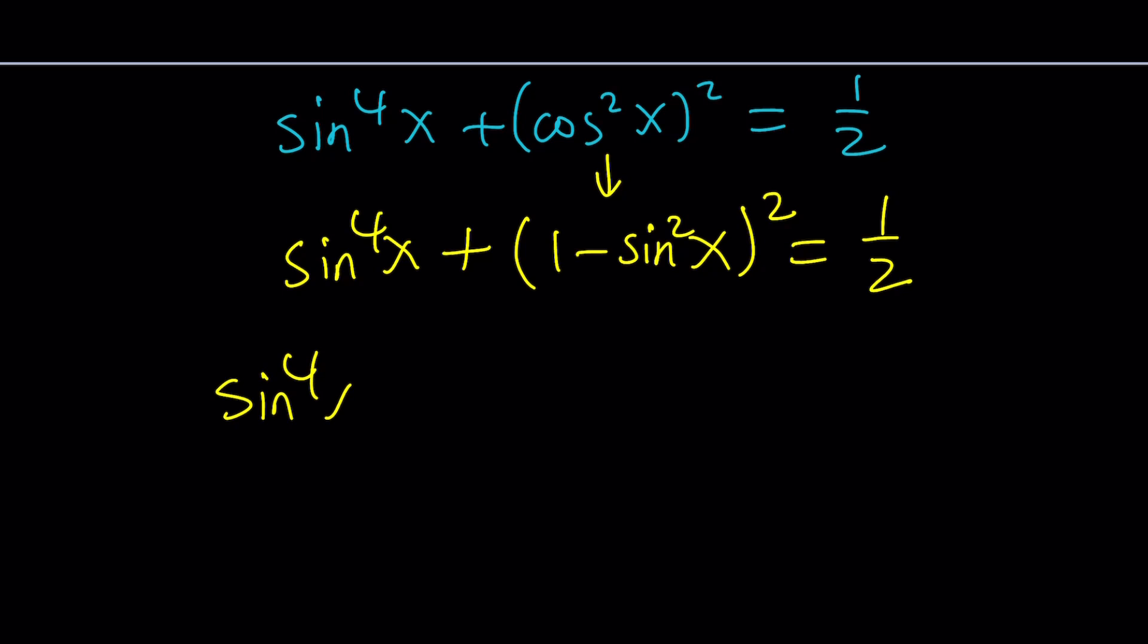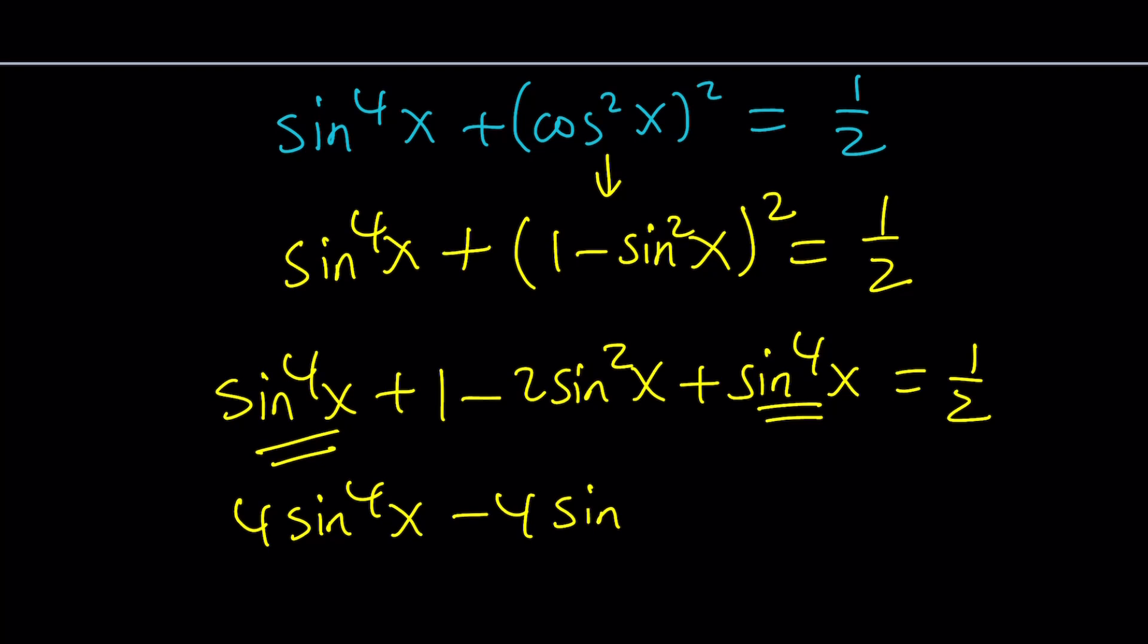We have sine x to the fourth from here. And then from this one, we're going to get one minus two sine squared x plus sine x to the fourth power again. And those powers are going to be added, which is going to give us two sine x to the fourth power. If you multiply everything by two, you're going to get four sine x to the fourth power minus four sine squared x. And then when you multiply by two, you're going to get a one here and you're going to have a two here. So that's going to turn out to be one.